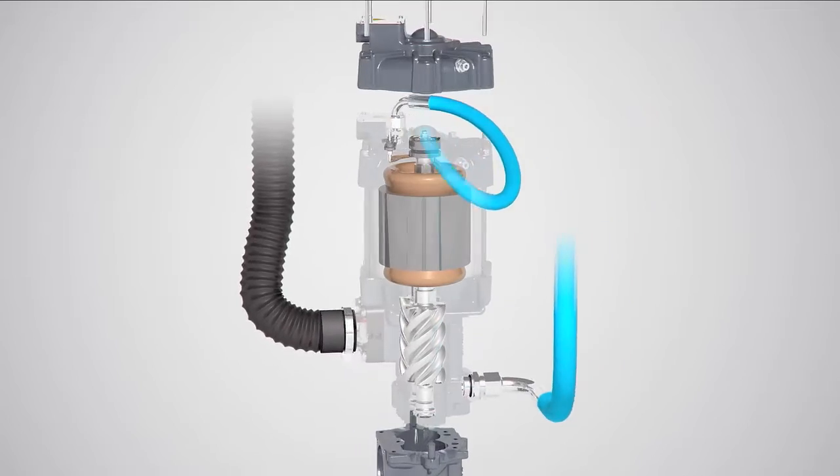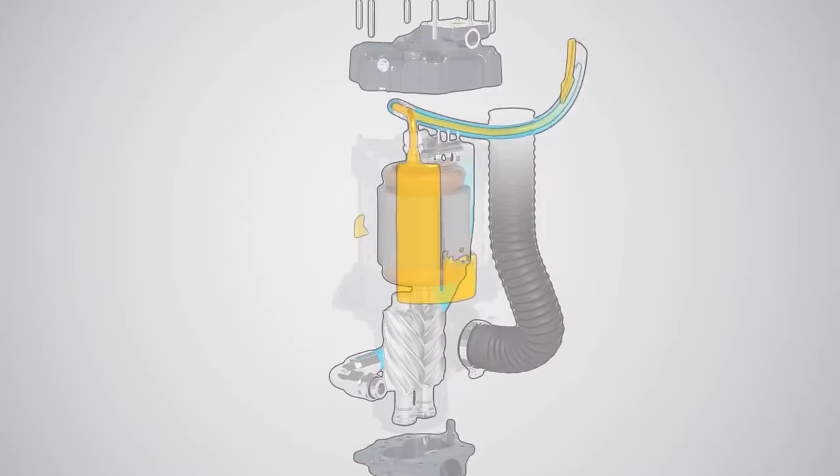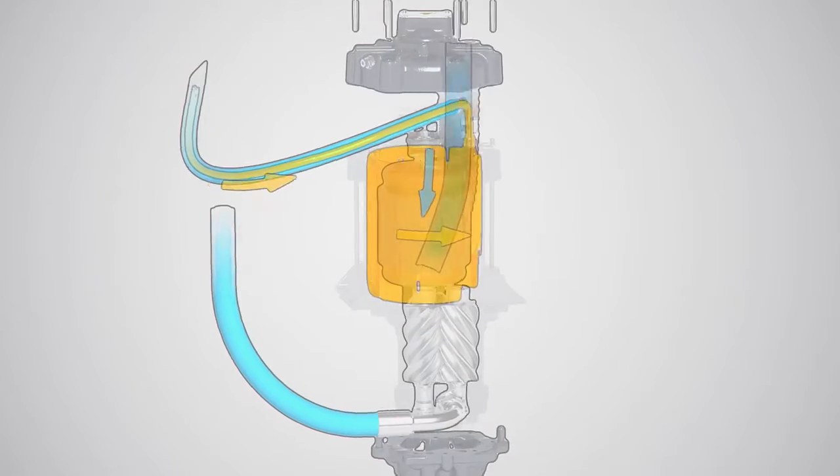Oil lubricates and cools the motor, its bearing and the compression element. Oil is injected in the motor housing and runs through canals around the motor, cooling the motor evenly.